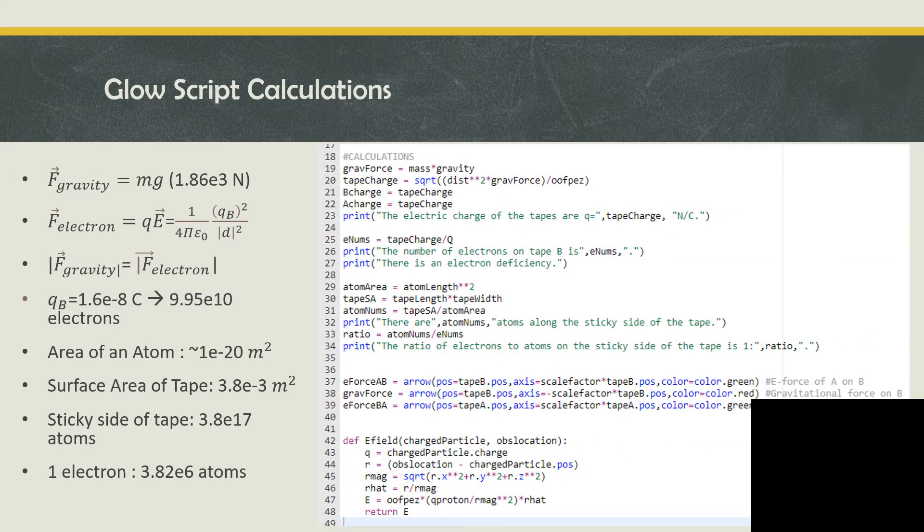Based on our calculations, the magnitude of the force of gravity on tape B is 1.86 times 10 to the negative 3 newtons and is equal to its electric force, which is its charge multiplied by its electric field or Coulomb's law. We can solve for the charge qB because the charge of tape B and tape A are the same, and when we do this, we get 1.6 times 10 to the negative 8 coulombs. If we divide the charge by e, or the electric charge of electron or proton, we find that it amounts to 9.95 times 10 to the 10 excess electrons.